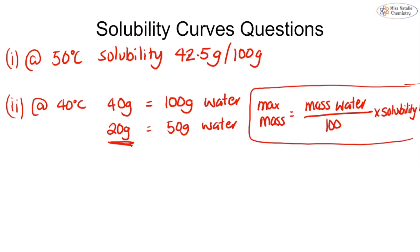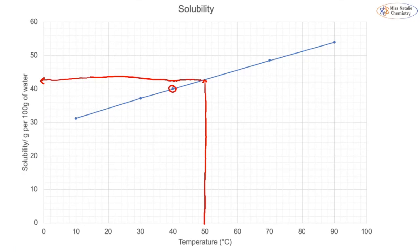For number three it has asked us to figure out the temperature at which crystals would appear if a solution containing 51 grams of solid is used. Again we go back to our curve and we're looking for 51 grams which is approximately here. So I would draw a nice straight line and I would see that I get a point here.